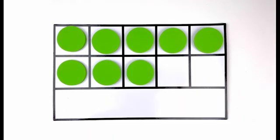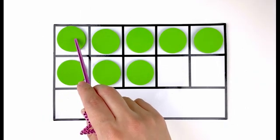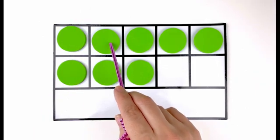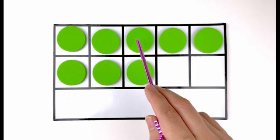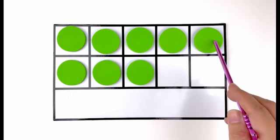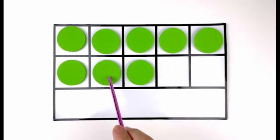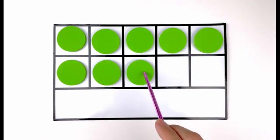How many green circles do you see this time? Let's count. One, two, three, four, five, six, seven, eight. Eight green circles.